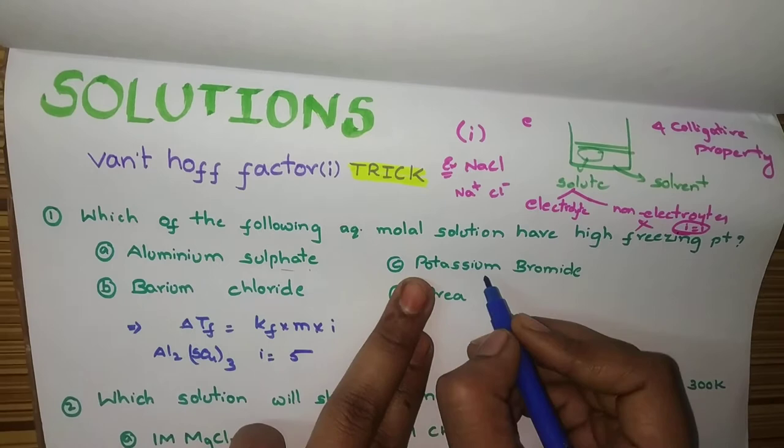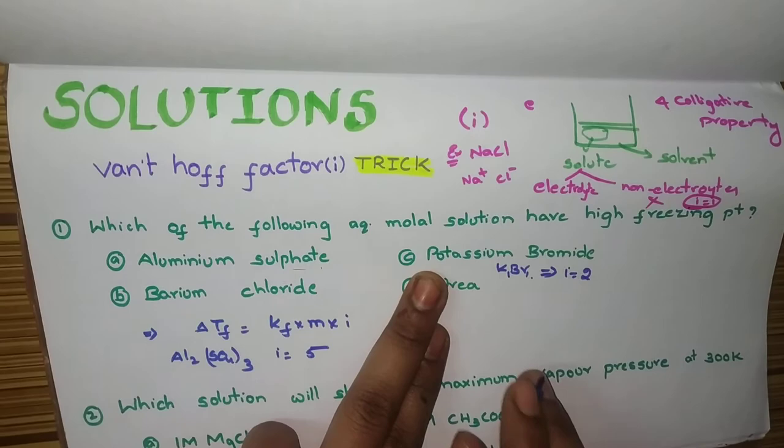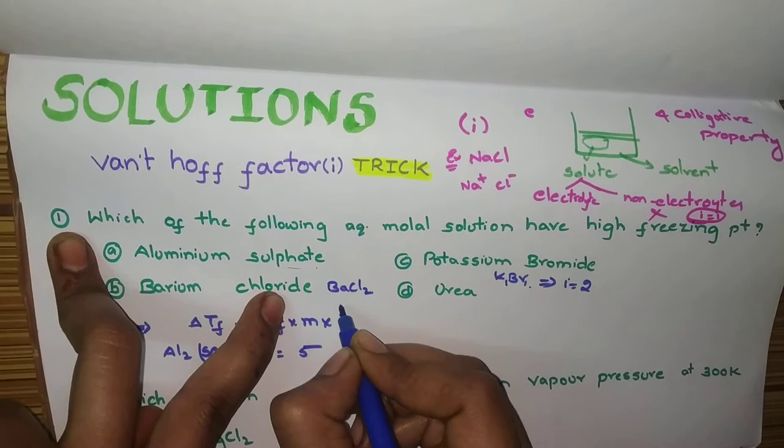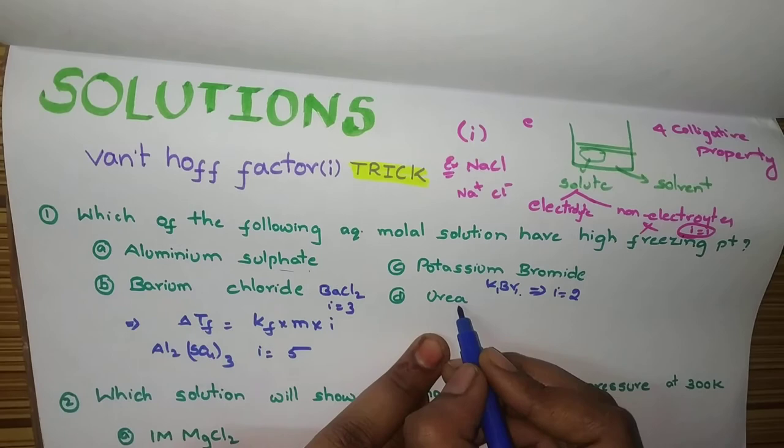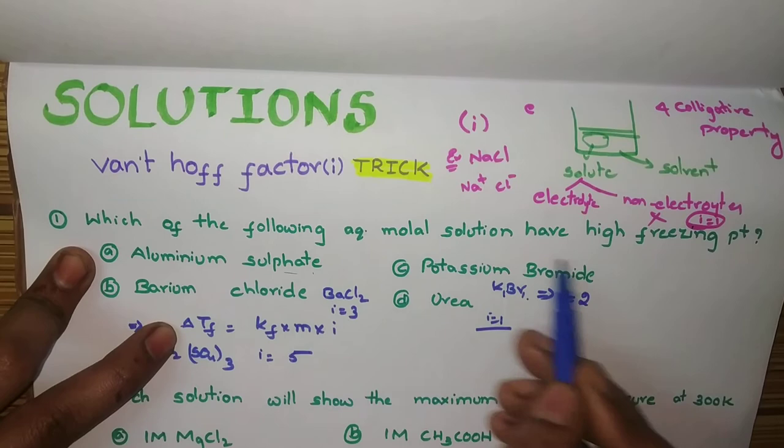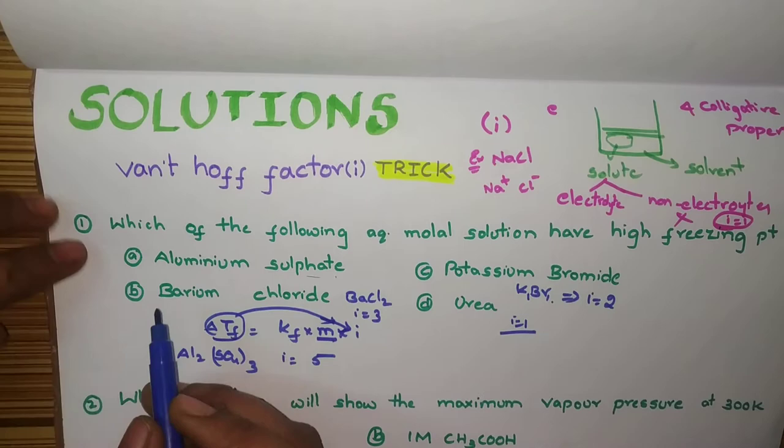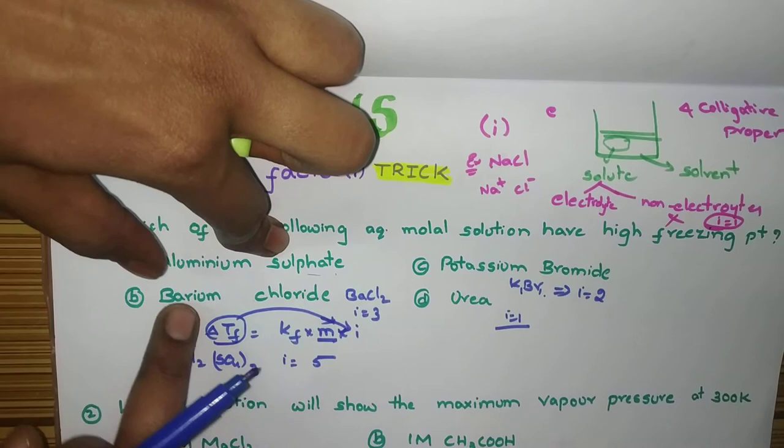And for second one, KBr, potassium bromide. K plus Br minus. 1, 1. 1 plus 1, 2. So, for this, i value is 2. Barium chloride. BaCl2. For this, i value is 1 plus 2, 3. And for urea, i value is 1. I already discussed, urea is a non-electrolyte. For non-electrolyte, i value will be 1. So, here, same molal solution. So, this will depend upon i value. Which of the following has more i value? See, aluminium sulfate has high value. Next, barium chloride. Next, potassium bromide. Next, urea.